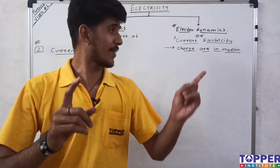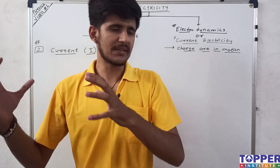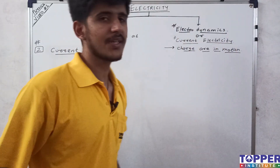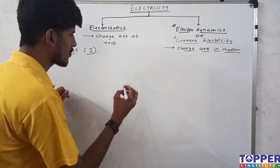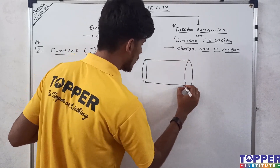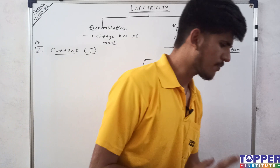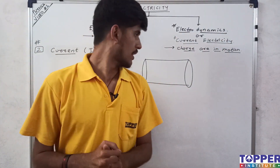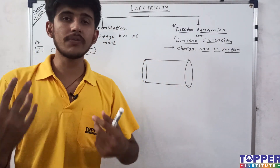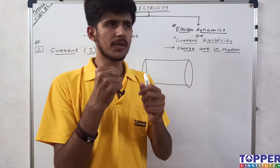When electrons flow through a conductor in a particular direction, they constitute a current. Let's understand this with a practical example. This is your conductor. If it's a conductor, it will have free electrons. A conductor contains many atoms, and those atoms have electrons.